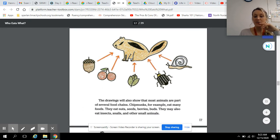The drawings will also show that most animals are part of several food chains. Chipmunks, for example, eat many foods. They eat nuts, seeds, berries, buds. They may also eat insects, snails, and other small animals.